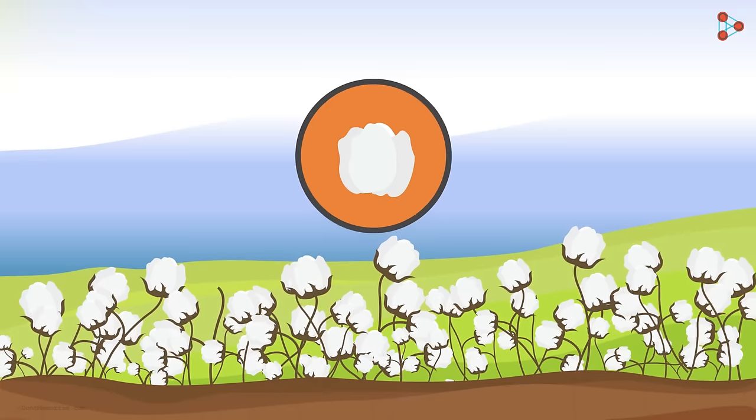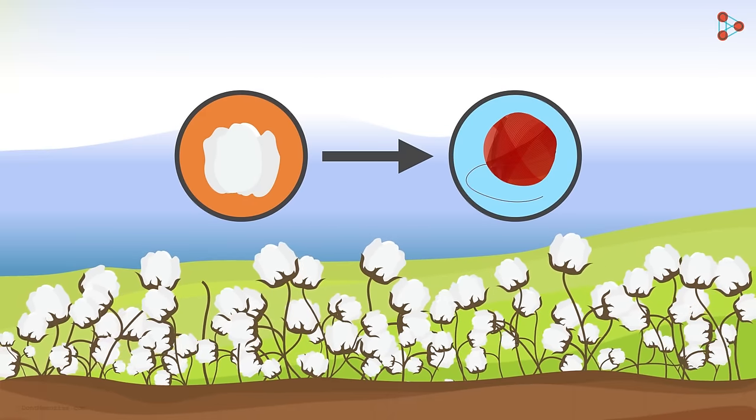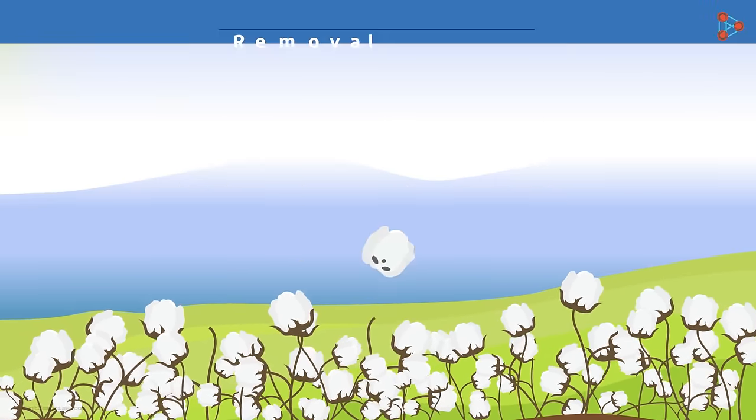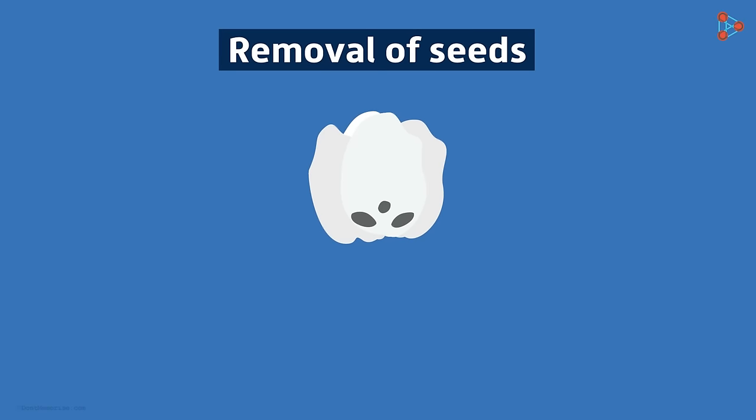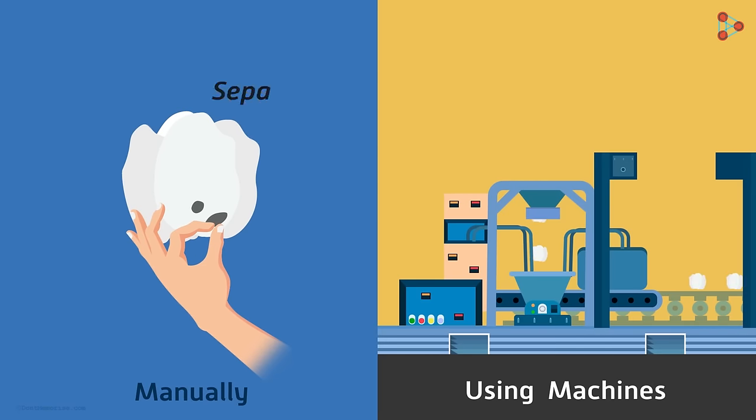These bolls are collected and drawn into yarns. But wait! Don't you think we need to separate the seeds and the soft fluffy part first? Well, that can be carried out either manually or these days mostly with the use of machines. The process of separating the seeds and the fibers is called ginning.